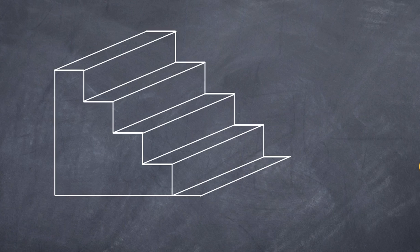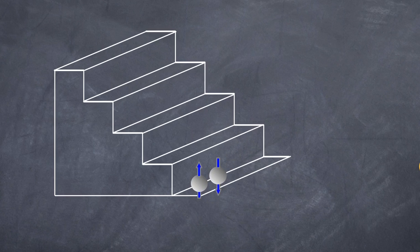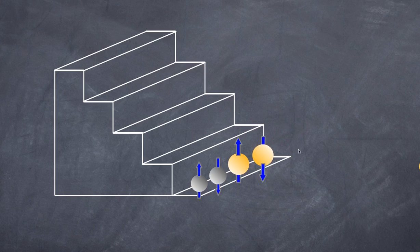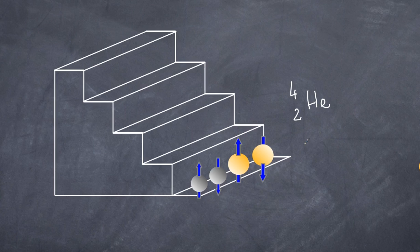Let's build helium. Helium has two protons — proton one spin up, proton two must spin down. I can add a neutron, which can be on the same energy level since it's a different fundamental particle. But a second neutron must spin down to pair with the first. So we have two protons and two neutrons — helium-4, mass number four, atomic number two. Summing the spins: these two cancel, those two cancel, giving a net spin of zero.